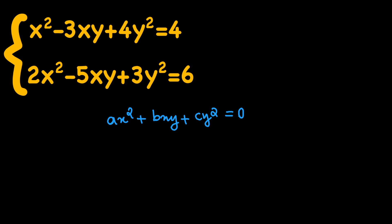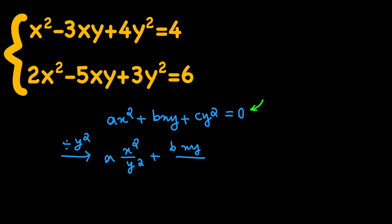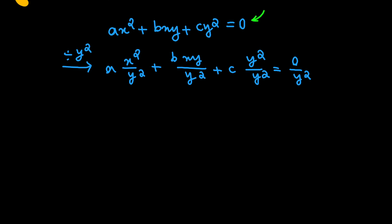The special thing about this equation is that the right-hand side is 0. In order to solve this, we divide both sides by y squared. In that way, we will have a times x squared over y squared plus b times xy over y squared plus c times y squared over y squared equals 0, which simplifies to a times (x/y) squared plus b times (x/y) plus c equals 0.